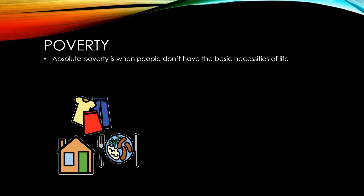Absolute poverty is when people don't have the basic necessities of life — that is, food, shelter, clothing, and access to things like power for lights and sanitation. While absolute poverty is certainly more common in developing nations, it does still exist in developed nations like the UK, where a certain number of people are still homeless and live without the basic necessities of life.